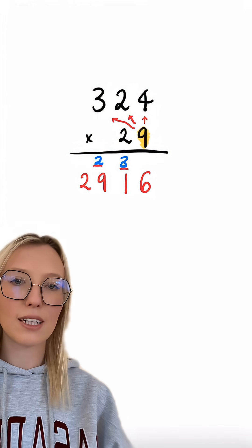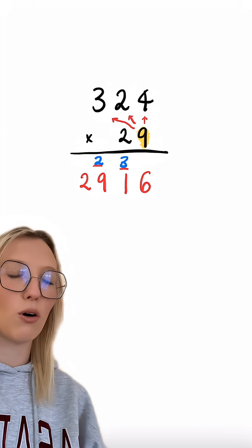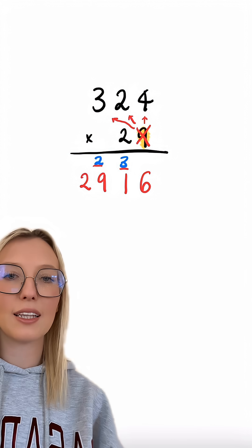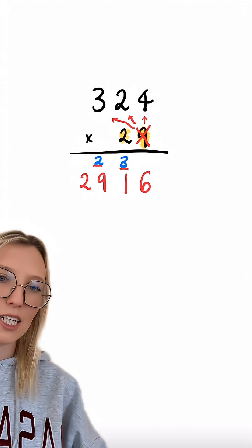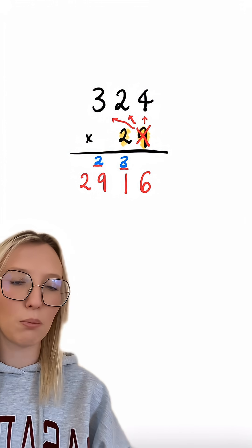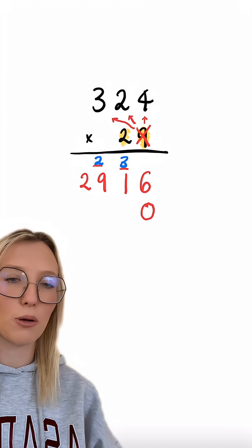We can now completely cross out that 9 and we're just focusing on the 2 and we're going to repeat the exact same process. That said, as we're looking at 2 and that's in a different place than the 9, we need to write a 0 below.